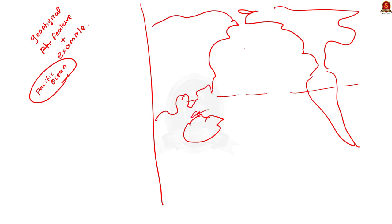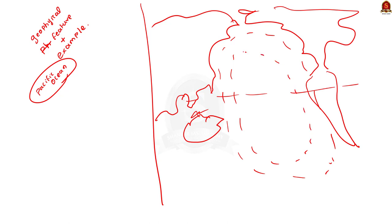This is a geography question, so you can use maps in your answers. The circum-pacific zone has 75% of Earth's volcanoes. Due to the large number of volcanoes, this zone is called the Pacific Ring of Fire. Also, 90% of world's earthquakes occur in this zone.